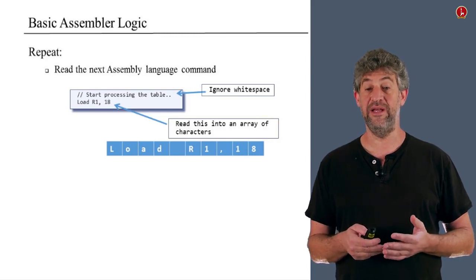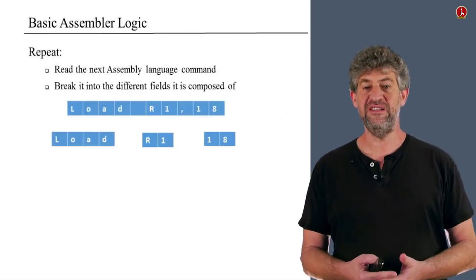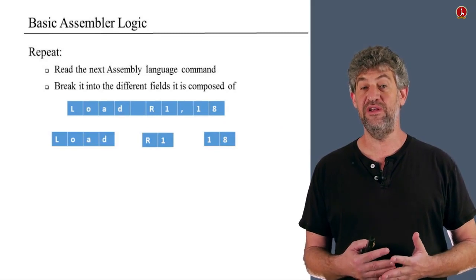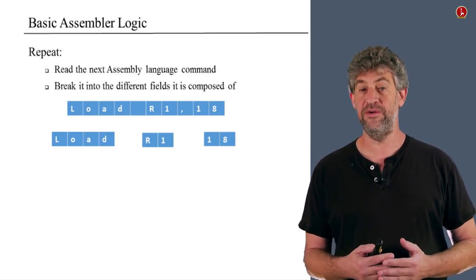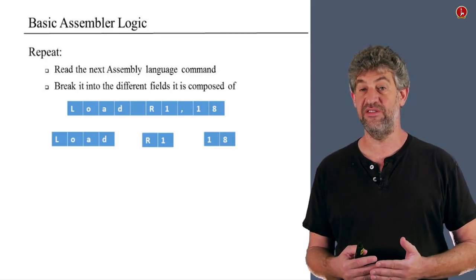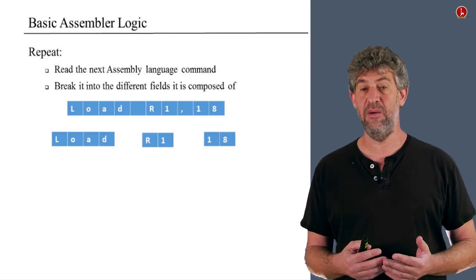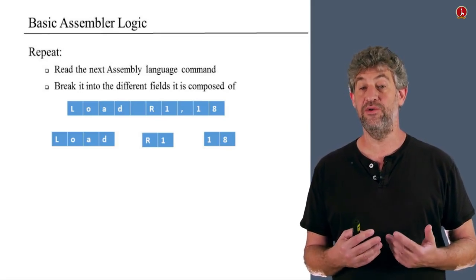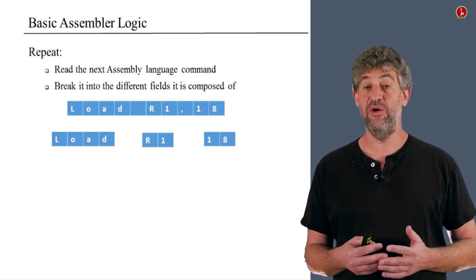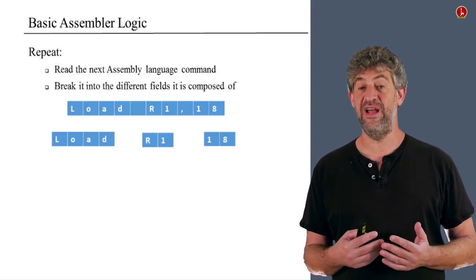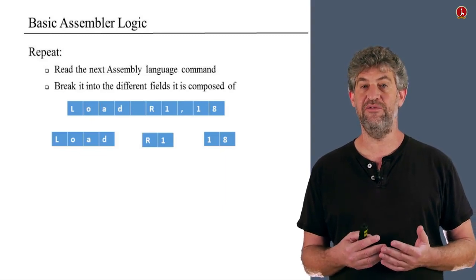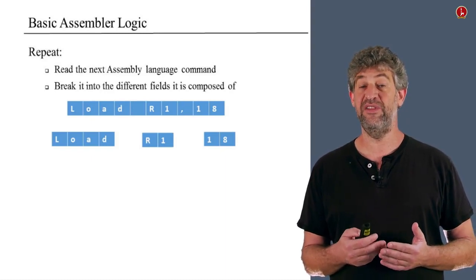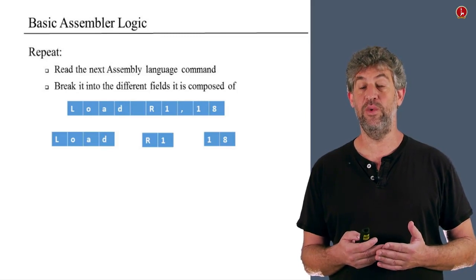The next step is taking that string of characters and breaking it into its different parts. When we look at the command 'load R1 18', the parts are: 'load' as the first part, 'R1' as the second, and '18' as the third. There's also a space and comma, but these are just syntax that helps us understand the command structure. We break the string into these three interesting substrings using simple string manipulation.